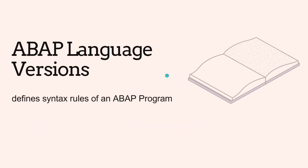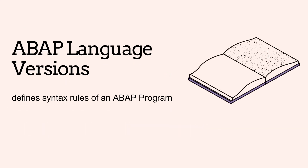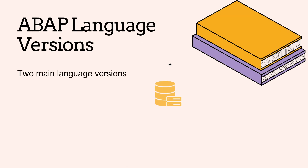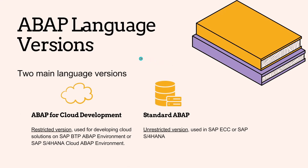ABAP Language Versions. ABAP Programs have an attribute called ABAP Language Version which defines the syntax rules of an ABAP Program. We have two main language versions. The first is ABAP for cloud development, a restricted version used for developing cloud solutions on SAP BTP ABAP Environment or SAP S/4HANA Cloud ABAP Environment. Restricted means that it covers a subset of the ABAP Language scope.